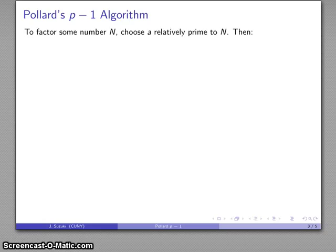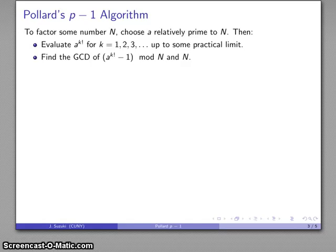So this is Pollard's p-minus-1 algorithm. To factor some number N, choose a base relatively prime to N. Then evaluate a to the k factorial for k equals 1, 2, 3, up to some practical limit. And find the greatest common divisor of (a to the k factorial minus 1) mod N and N itself. Because we're finding a to the k factorial, there's a good chance in this product that we're going to include p-minus-1, and so we'll get a to the (p-minus-1) to something, which may hopefully be congruent to 1.